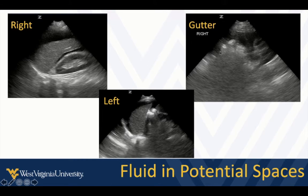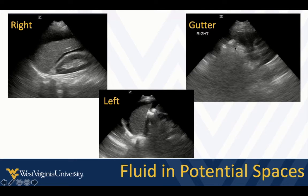On the left side, we see sub-diaphragmatic fluid, but we don't really see fluid between the spleen and the kidney. This is your money area to look for on the left side for free fluid. Make sure you include the paracolic gutters when examining for free fluid. Come down below the kidneys, fan to the ceiling, and look for fluid on your screen — it's going to look like fluid compressing the bowel down and out of the way. That's what it looks like in the upper and mid abdomen.